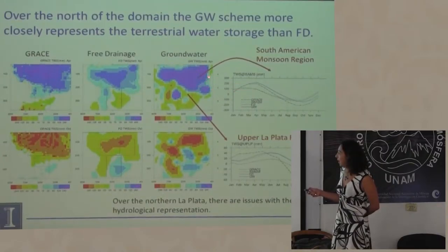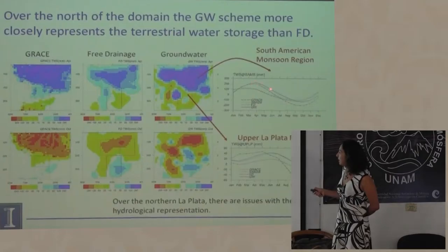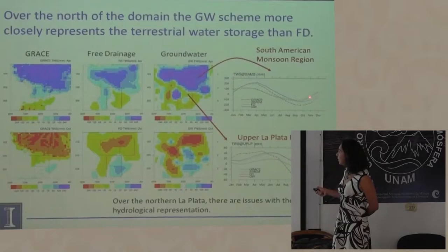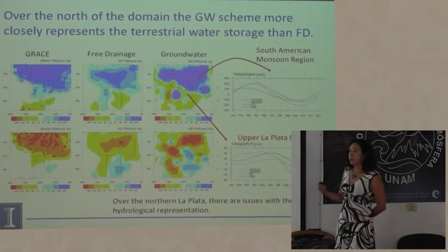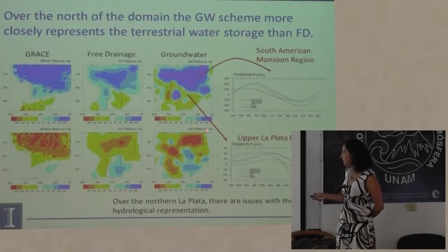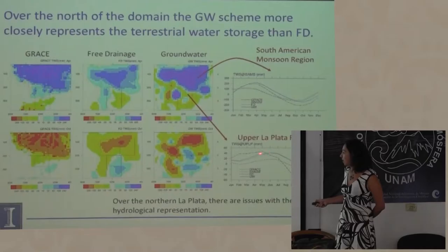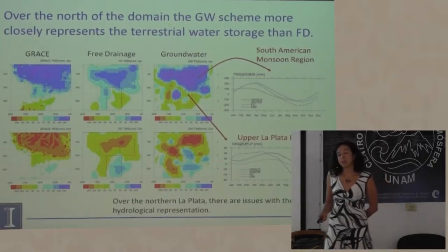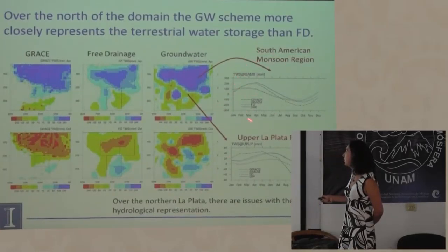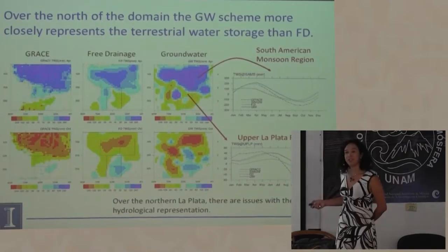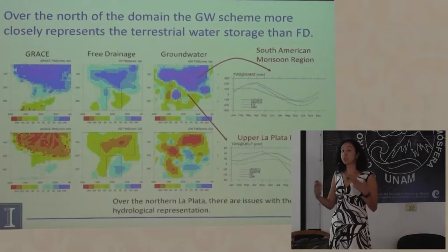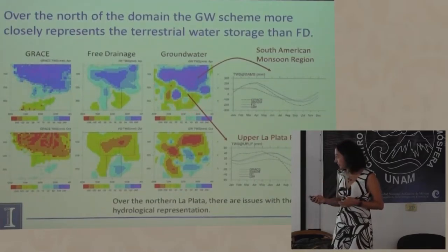Para la región sur de Sudamérica, GRACE está en negro, el esquema de agua subterránea en azul y el drenado libre en rojo, y el modelo de subterráneo simple en verde. Vemos que en términos del tiempo y el almacenamiento pico de agua, el esquema de agua subterránea respeta mejor las observaciones. Cuando llegamos a la parte norte de La Plata tenemos problemas: los modelos realmente no están capturando el almacenamiento de aguas terrestres como GRACE, en parte porque hay inundaciones en esta región que no tienen representación explícita en el modelo WRF.